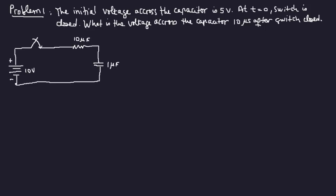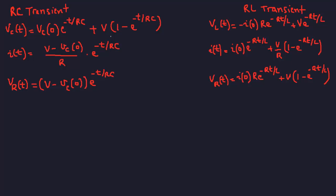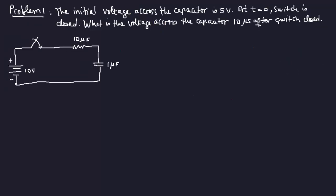Problem number one: the initial voltage across the capacitor is 5 volts at t equals zero. The switch is closed at t equals zero, and the question is to find the voltage across the capacitor 10 microseconds after the switch is closed. We're going to use this particular formula over here, so we have VC(t).